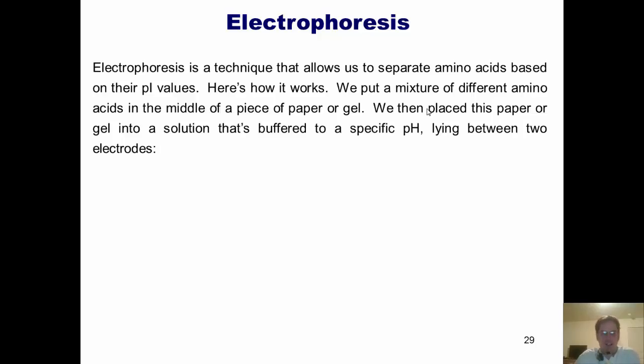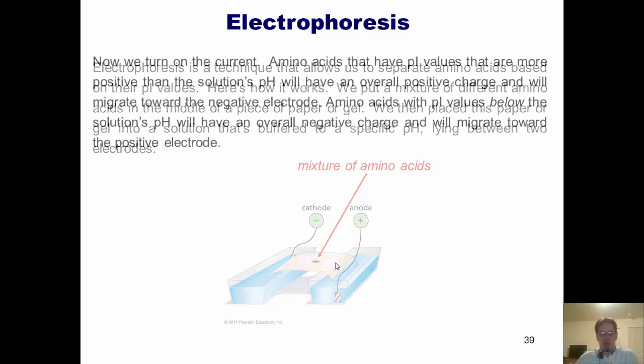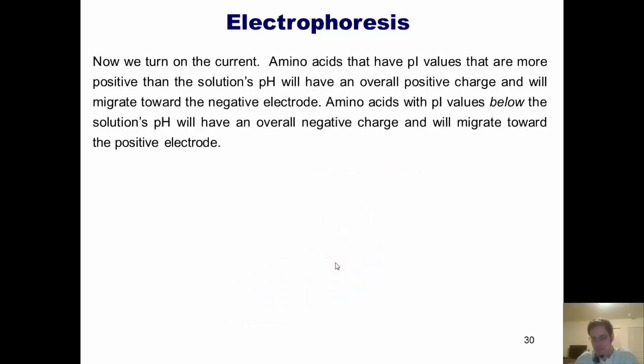And now I'll address our final concept from this PowerPoint lecture, that of electrophoresis. Electrophoresis is a technique that allows us to separate amino acids based on their pI, or isoelectric point values. Here's how it works. We put a mixture of different amino acids in the middle of a piece of paper or a gel. We then place this paper or gel between two electrodes in a solution that's buffered to a specific pH. Now we turn on the current.